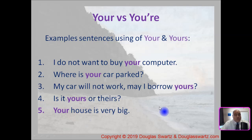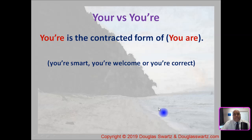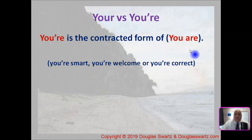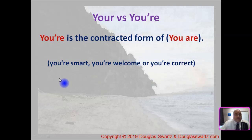Showing who owns or who possesses something. You're — Y-O-U-apostrophe-R-E — is the contracted form of you are. You're smart. You're welcome. You're correct. Another way of pronouncing it is: you are smart, you are welcome, you are correct.